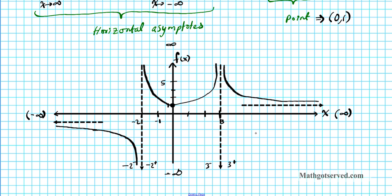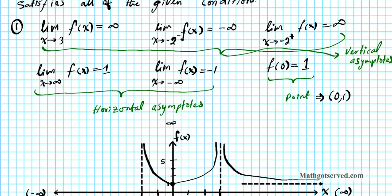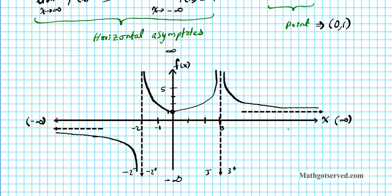So that is what the function looks like. Let's go over the problem again and verify our answer matches. As x approaches 3 from both sides, the function goes to infinity — we can see that as we approach from the left and right, the function heads upward toward the vertical asymptote. As x approaches negative 2 from the right, the function heads toward infinity; from the left it heads toward negative infinity. As x approaches infinity the function approaches 1, and as x approaches negative infinity the function approaches negative 1.